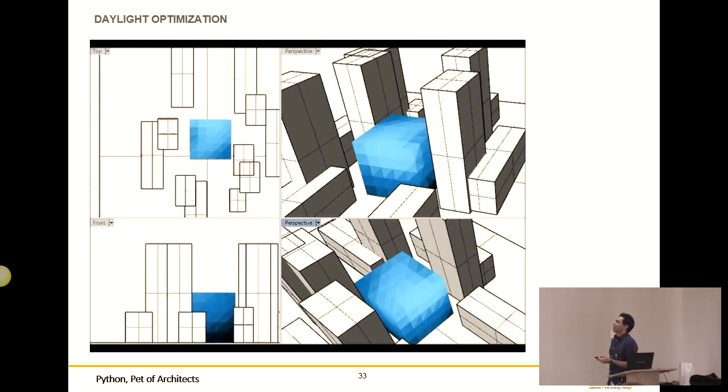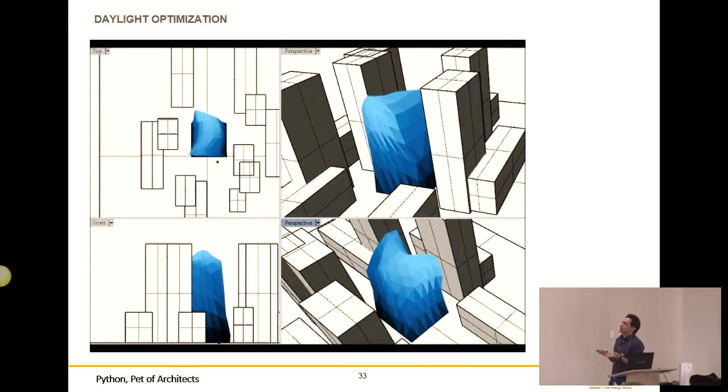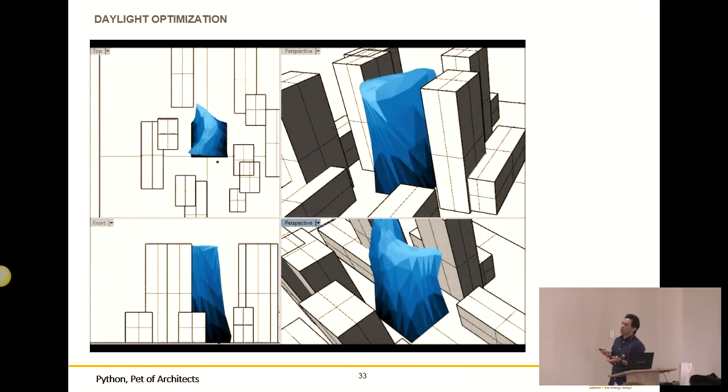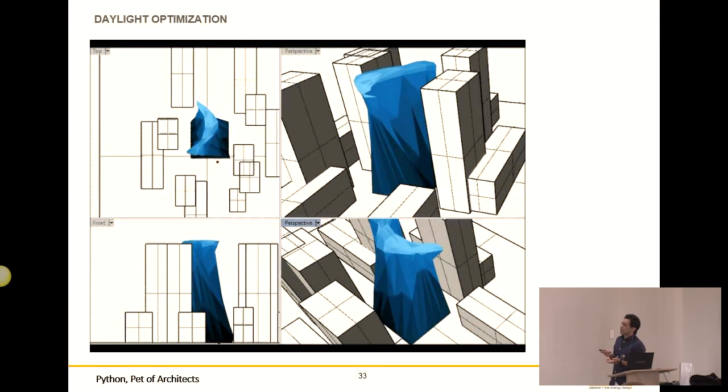It was so funny for us that the creature was so intelligent that he knew that there is no way to catch the best skylight in the middle of the context. So he ran away and expanded to get a better result. Then we said, okay, please stay here. We made this limitation. We need to solve the problem here. Don't run away. And then it becomes taller and taller based on our limitation and expands like this in the middle of context to get the better daylight.